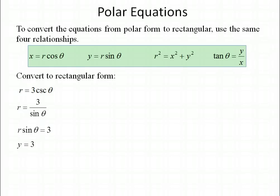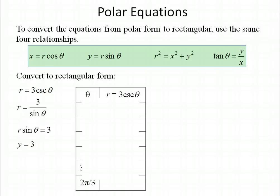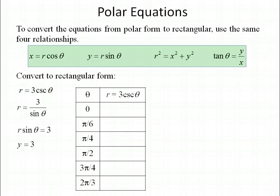In rectangular form that's easy to graph: just a horizontal line through y equals 3. It's not as easy to identify in polar form as 3 cosecant theta. Let's plug some values of theta into the polar form to verify. If theta equals 0, sine of 0 is 0, so 3 divided by 0 is undefined. At pi over 6, sine of pi over 6 is 1 half, so r equals 6.